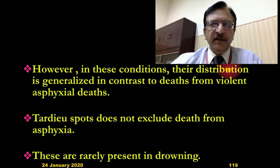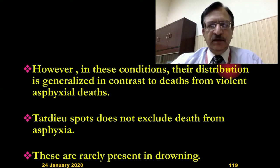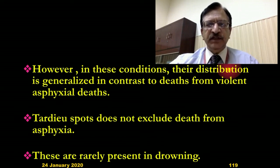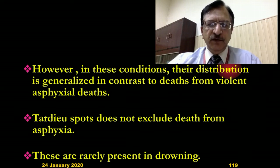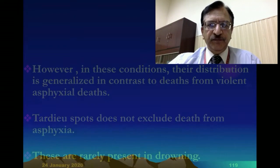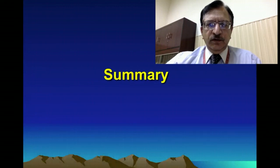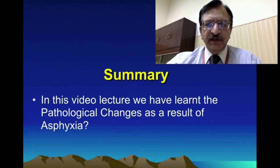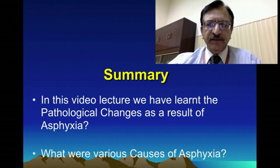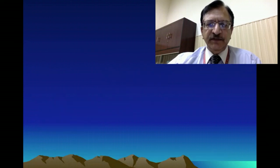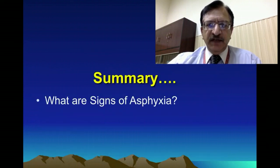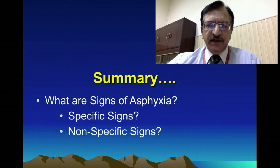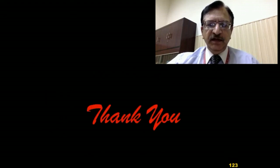Petechial hemorrhages are rarely present in drowning, because if the water is flowing the body is constantly rolling and changing position, and there may not be time to develop hypostasis or the petechial hemorrhages. In summary, in this video lecture we have learned the pathological changes as a result of asphyxia, the causes of asphyxia, and the signs of asphyxia — the specific signs and the non-specific signs. Thank you very much. Take care.